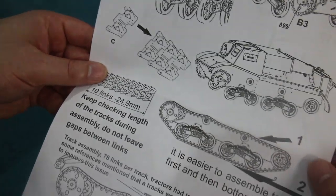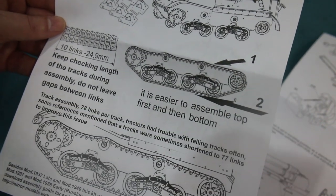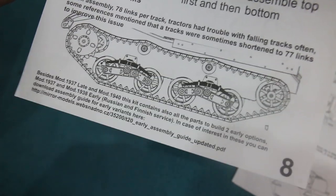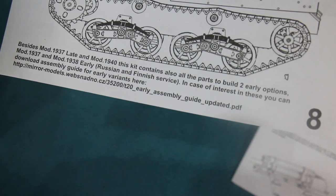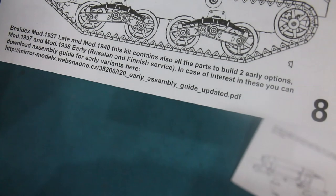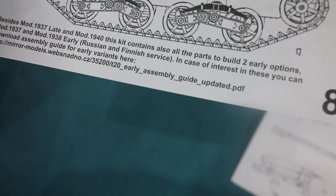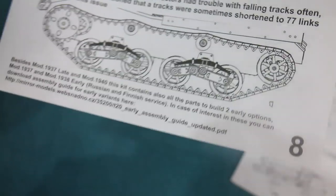Then the suspension is fitted and the tracks are built and fitted. It has single link tracks. It also says besides model 1937 late and model 1940, this kit contains also all the parts to build two early options: model 1937 and model 1938 early for Russian and Finnish service. In case of interest in these you can download assembly guide for early variants. There is a link to the Mirror Models website where you can download a PDF. That's a very nice touch as well.